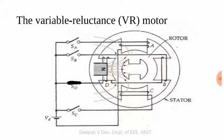So variable reluctance stepper motor: when the stator coils are excited, the rotor occupies a position which will reduce the opposition to the magnetic field produced by the stator. This is the variable reluctance stepper motor working principle. In this machine, the stator has 4 poles and the rotor has 2 poles, giving a step angle of 90 degrees.